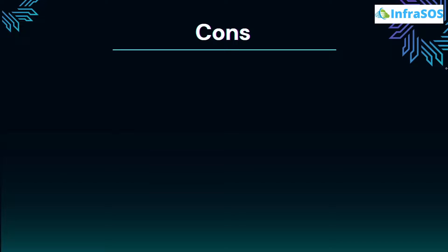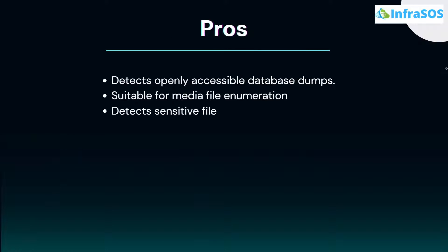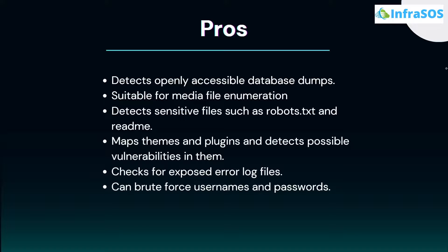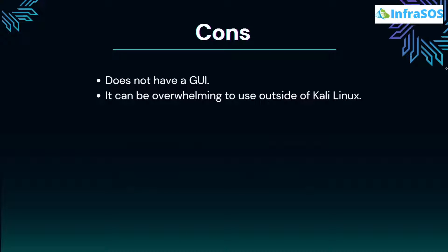At number 12 we have WPScan. WPScan is a vulnerability assessment tool for scanning WordPress web engines. It helps identify whether your WordPress setup is vulnerable to attacks, scanning for vulnerabilities in theme files, plugins, and core. Pros include detecting openly accessible database dumps, suitability for media file enumeration, detecting sensitive files such as robots.txt and readme.txt, and mapping themes and plugins for vulnerabilities. Cons include no GUI and it can be overwhelming to use outside of Kali Linux.